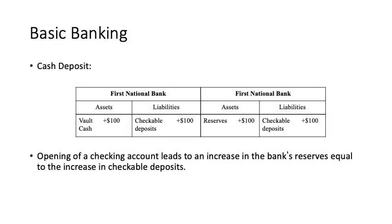Now let's start with the basic banking process. Assume someone is going to deposit money in the bank. The rule here is that the bank should keep reserves of 100% from checkable deposits. In the first stage, when a depositor deposits $100 in First National Bank, assets will increase as cash by $100 and checkable deposits will increase by $100.